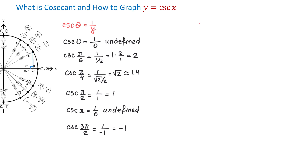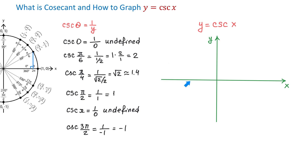Let's talk about the function y equals cosecant of x. In this function, x is the independent variable and it represents the angles in radians, and y is the dependent variable representing the value of the cosecant. To graph it, we will start with a rectangular coordinate system and plot the angles in radians along the x-axis. To the right of the origin we have pi over 2, pi, 3 pi over 2, 2 pi, and so on. To the left, we have negative pi over 2, negative pi, negative 3 pi over 2, negative 2 pi, and so on.